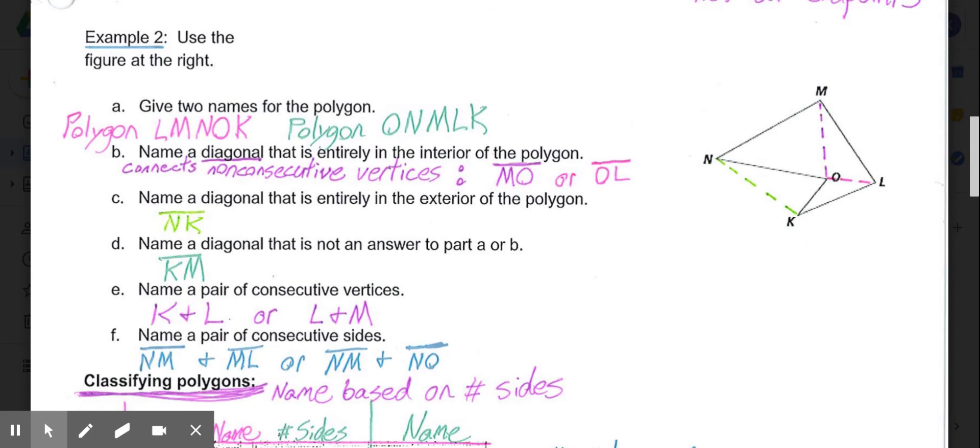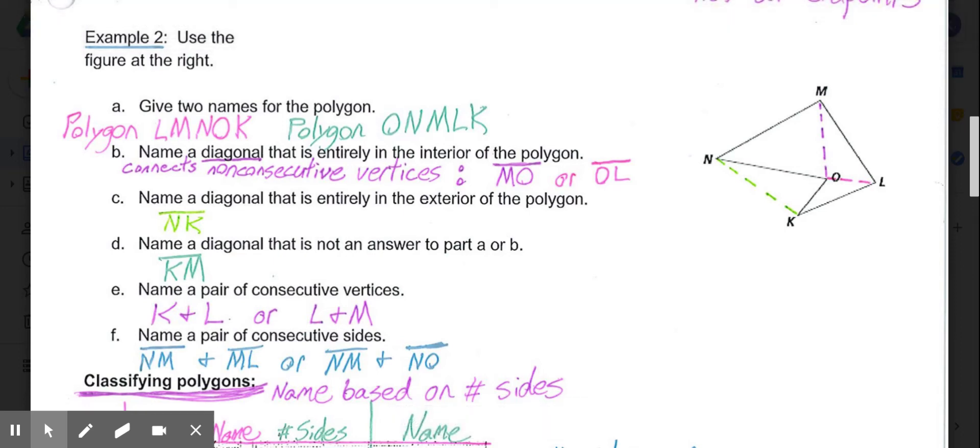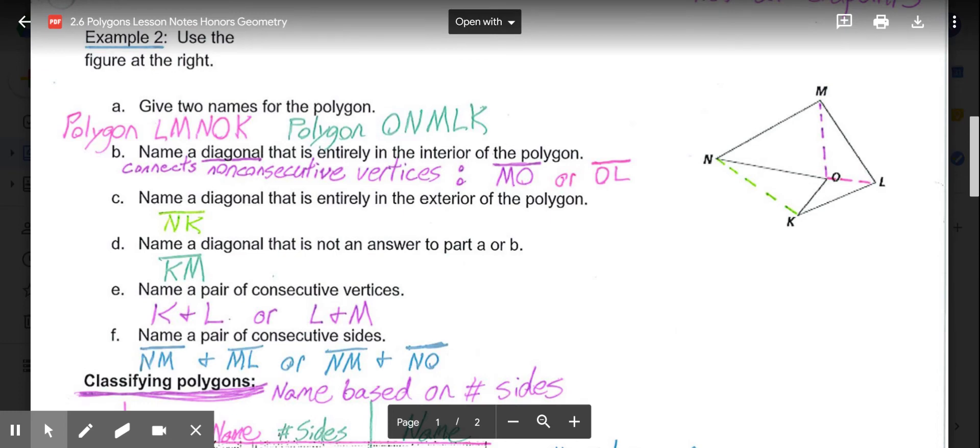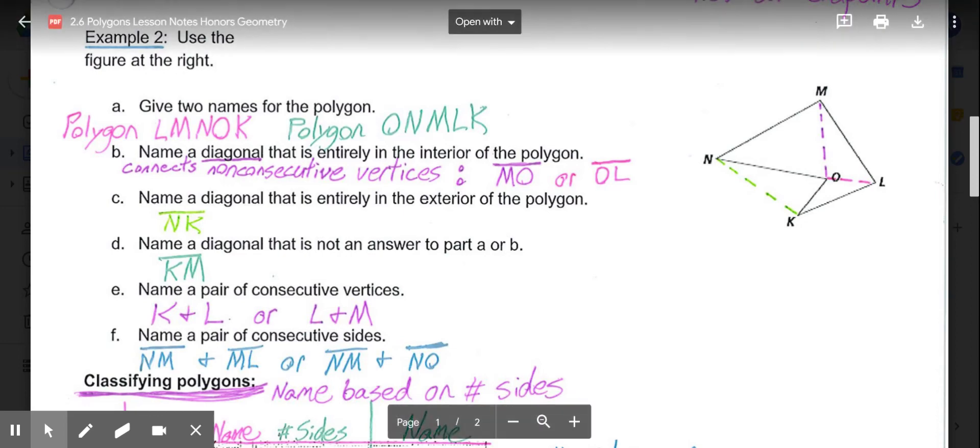Example 2, for parts A through F, is asking us to look at the figure over here. You'll already see I drew in a couple of additional segments, which we'll cover as we go through A through F. In A, give two names for the polygon. We could call it anything with the vertices in consecutive order. That could be polygon LMNOK or ONMOK for two examples. Name a diagonal that is entirely in the interior of the polygon, so something that's completely inside our polygon, and it connects non-consecutive vertices. M-O would be an option. L-O would also be an option. Both are diagonals contained entirely on the inside.